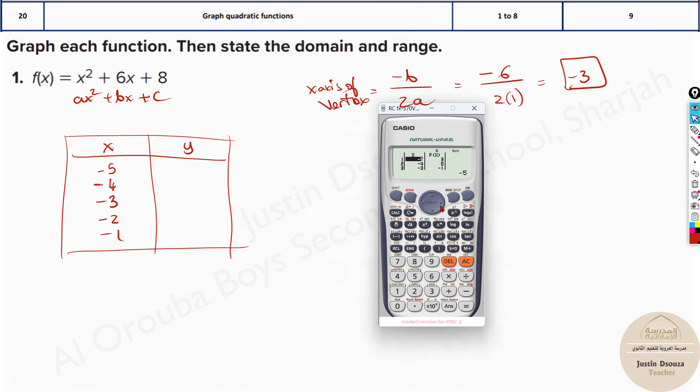For -5, the values are 3. Then 0, -1, 0, 3. So you can easily copy the values from this table. Now I just write them out over here. It is 3, 0, -1, again 0 and 3. Because this is the vertex, right? This is the vertex. Then obviously it will be symmetrical.